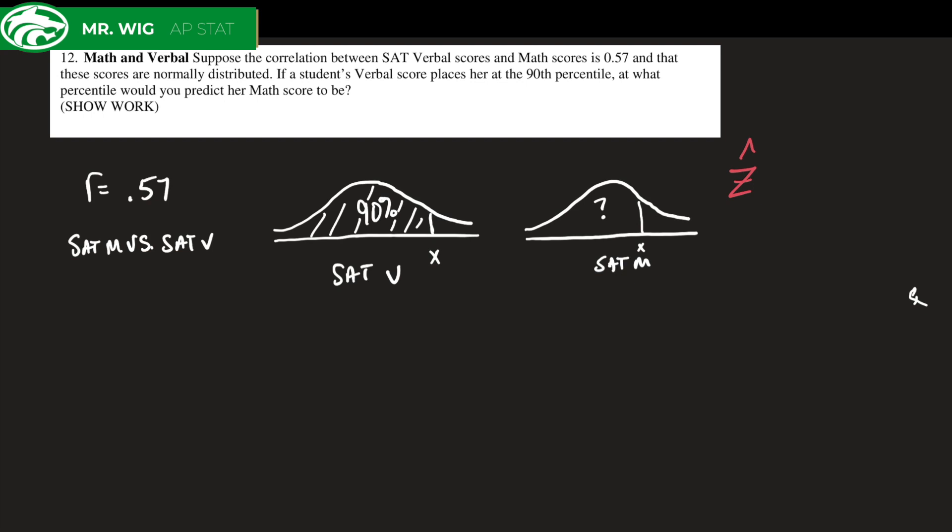The formula we know looks like this: the estimated z-score for the y is equal to r times the z-score for the x value.